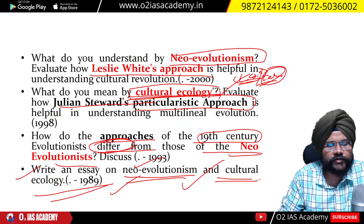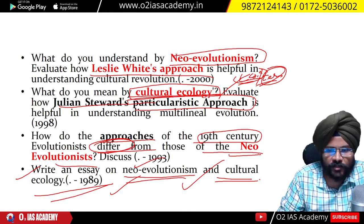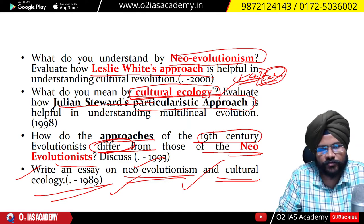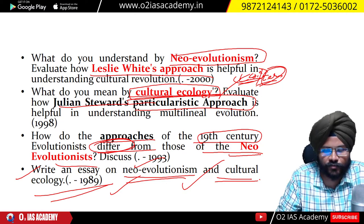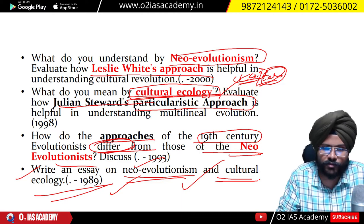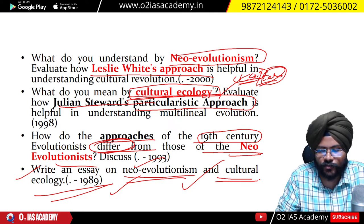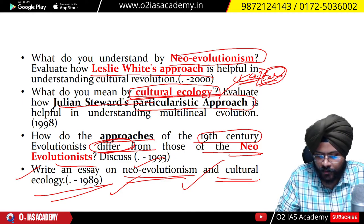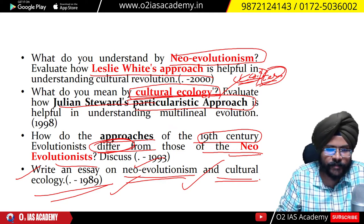We have already done those schools of thought within new evolutionism. The first was multilinear evolutionism and the second was universal evolutionism. In multilinear evolutionism, we already did Julian Steward's cultural ecology approach — cultural types, etc. Then we moved to universal new evolutionism and covered White's energy approach and Childe's Darwinian materialistic approach.